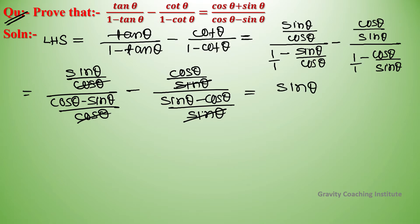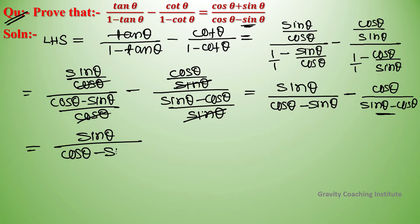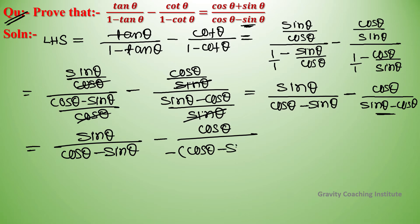This gives us sin theta upon cos theta minus sin theta, minus cos theta upon sin theta minus cos theta. If the denominators are identical it will be easy to combine. The denominator is cos theta minus sin theta, so we change sin theta minus cos theta to cos theta minus sin theta by factoring out a negative.